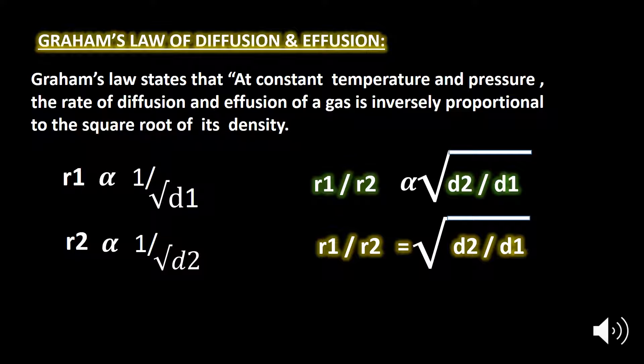Graham's Law of diffusion or effusion in terms of density states that at the same temperature and pressure, the rate of diffusion or effusion of gases is inversely proportional to the square root of its density. We write: R₁ is inversely proportional to the square root of density d₁, and R₂ is inversely proportional to the square root of density d₂. Dividing these gives R₁ over R₂ equals the square root of d₂ over d₁. This is Graham's Law in terms of density.